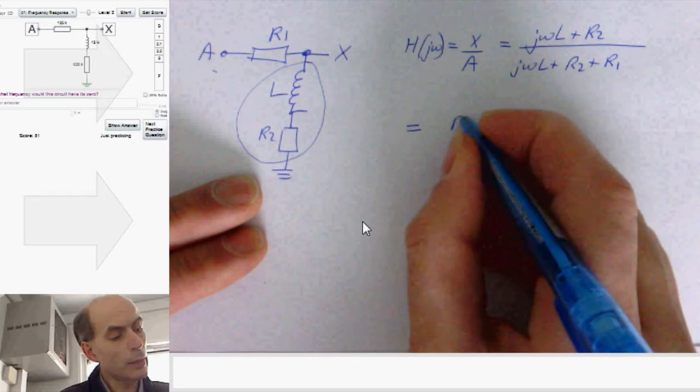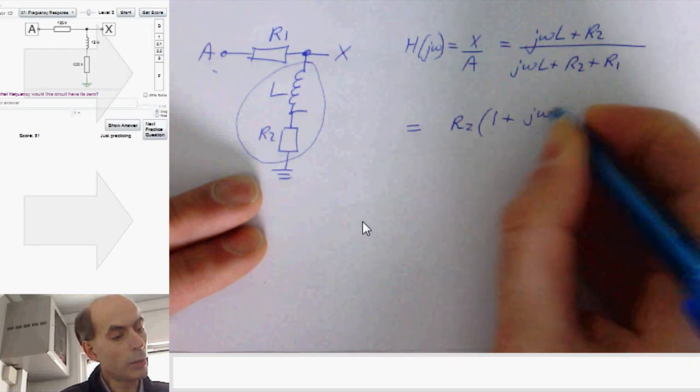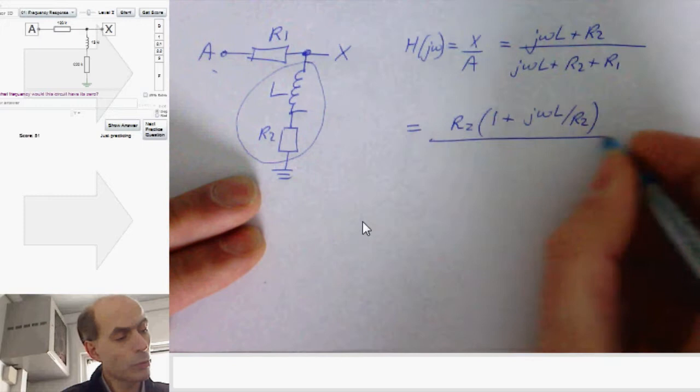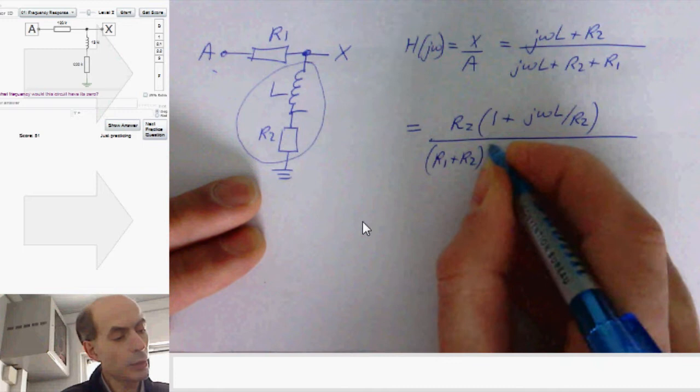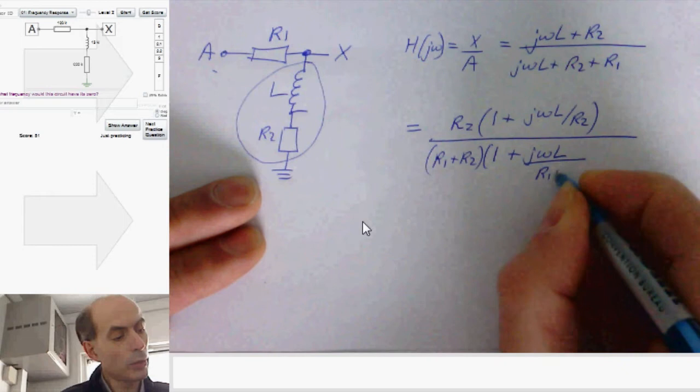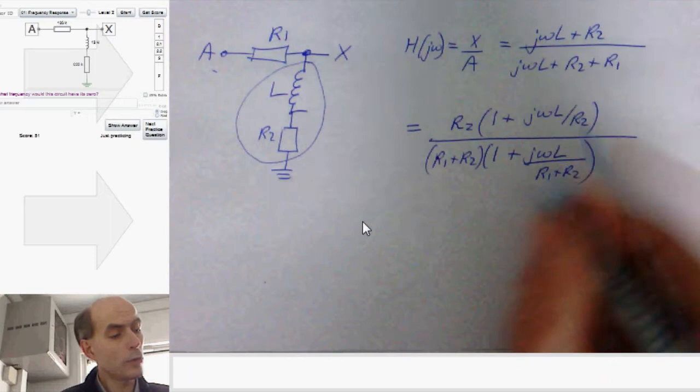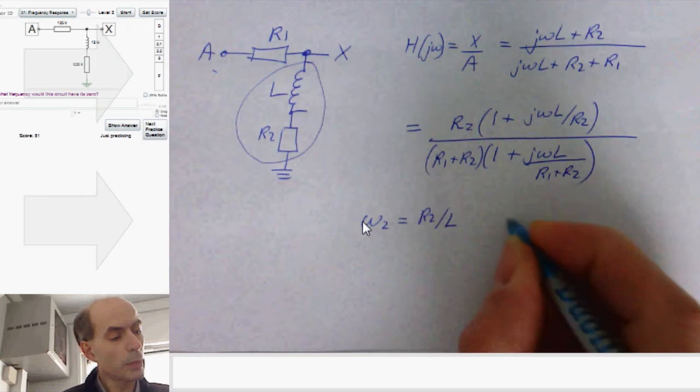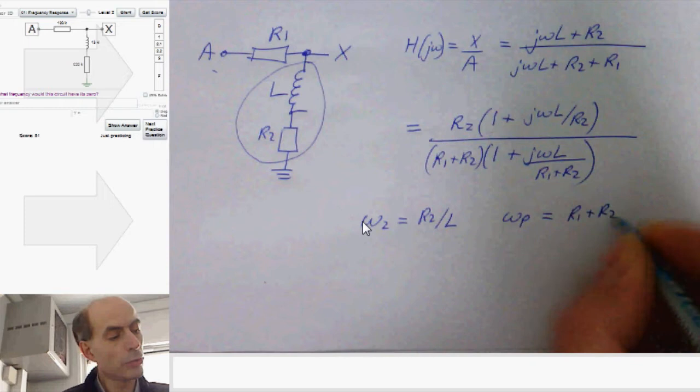And I can do that quite easily by taking the R2 out of the top expression here, and just rewriting that as R2, 1 plus J omega L over R2. Same thing. And do a similar thing at the bottom. Only here I'm taking R1 plus R2 out. And I could write it as 1 plus J omega L over R1 plus R2. And from that, you can hopefully see that the zero, the omega Z, is just equal to R2 over L. And the pole, the omega P, is equal to R1 plus R2 over L.